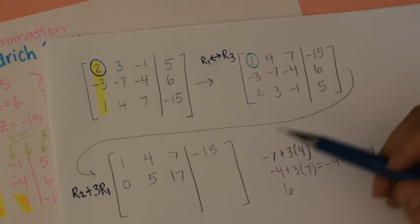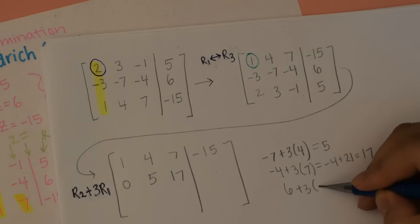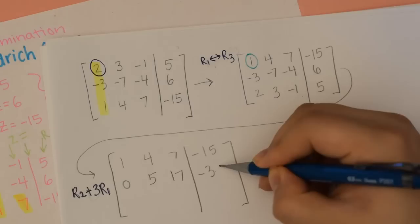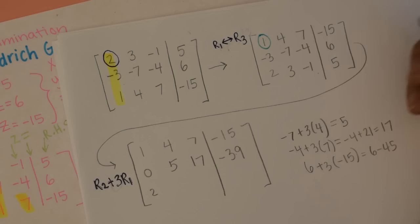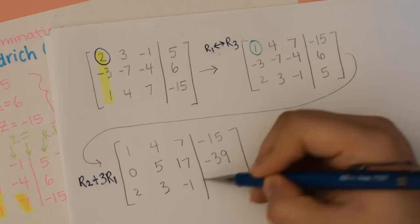Be careful with adding and subtracting. Remember, this multiple can be negative, so if you want to do a minus, you could. But whatever you do, you have to apply to every term — just like if you were working with full equations. So 6 plus 3 times negative 15: that's 6 minus 45, which is negative 39. And then I'm going to keep row 3 as it is: 2, 3, negative 1, 5.